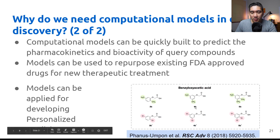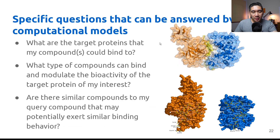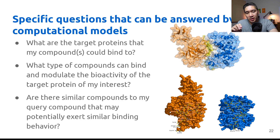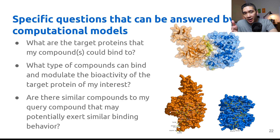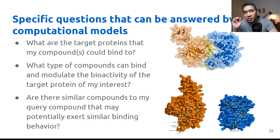This figure is an example of functional group analysis from a structure-activity relationship model from one of our papers. Other specific questions that computational models can answer include: what target proteins can my compound bind to? The target protein could be aromatase, protease, glucosidase, amylase, etc. With the target protein of interest, you want to know which compound or small molecule could modulate its activity — either inhibiting or activating it.